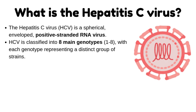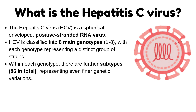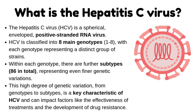HCV is classified into eight main genotypes, with each genotype representing a distinct group of strains. Within each genotype, there are further subtypes — 86 in total — representing even finer genetic variations. This high degree of genetic variation, from genotypes to subtypes, is a key characteristic of HCV and can impact factors like the effectiveness of treatments and the development of drug resistance.